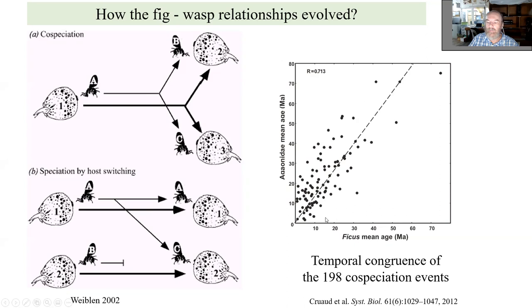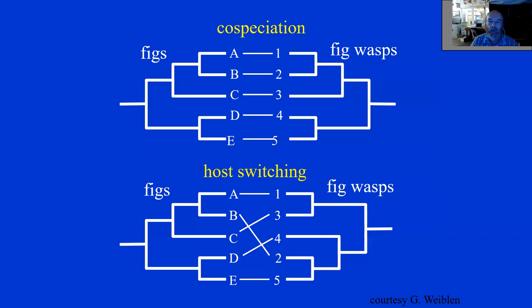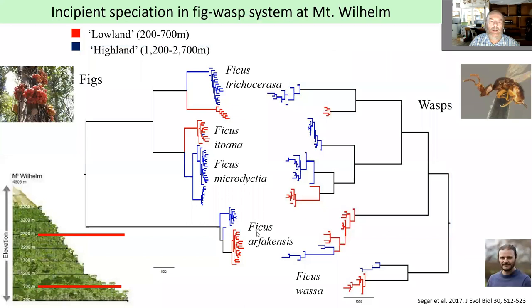The estimated ages of speciation events for ficus and their fig wasps are pretty much happening at the same time, supporting a co-speciation model rather than host switching, which would lead to incongruent phylogenies. This is a nice example of speciation in action — an elevation gradient at Mount Wilhelm in New Guinea, where Simon Seeger and his team looked at the molecular structure of figs and their fig wasps.